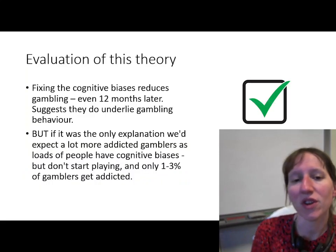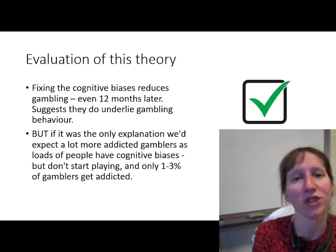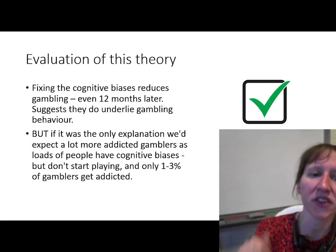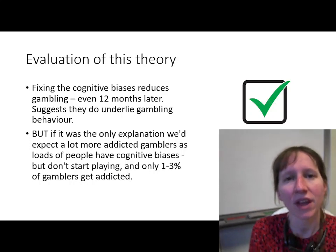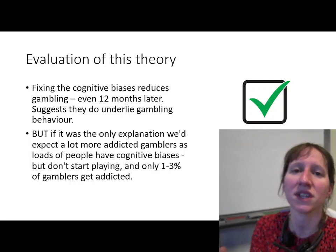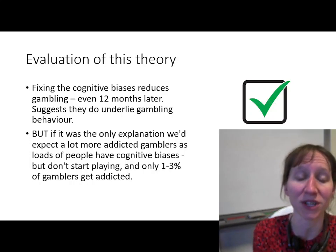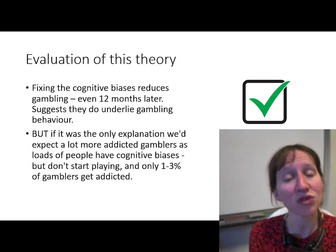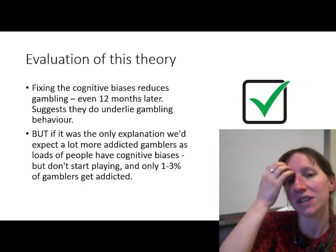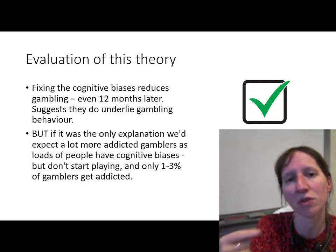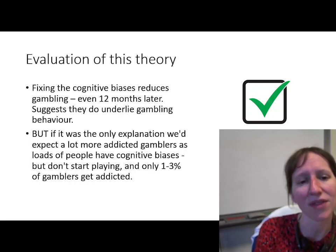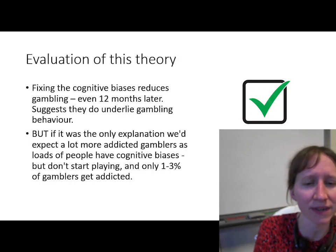We've looked at what the cognitive approach says about the causes of gambling — now let's look at whether this is true. A strength of this theory is that if we change the way somebody who is addicted to gambling thinks about it — i.e., we change their cognitions, their thought processes — then that actually does reduce gambling. If you can identify faulty thought processes and correct them, they will gamble less, suggesting cognitions are having an influence on gambling behaviour. There's a study in your textbook about that if you want further details.